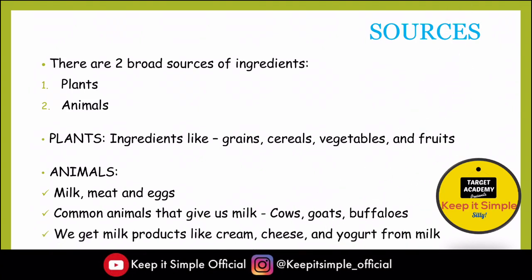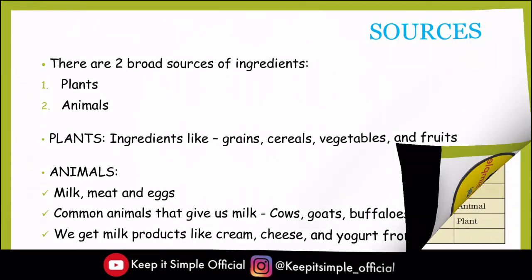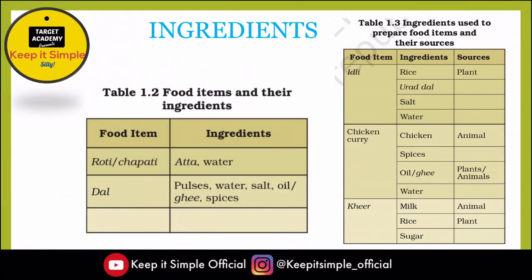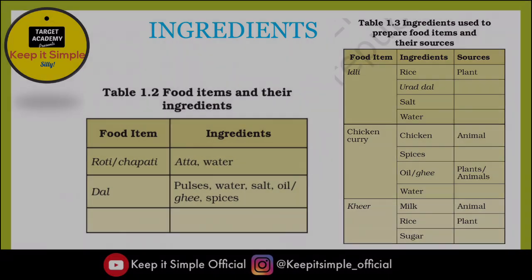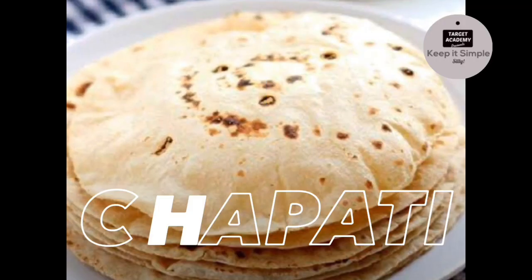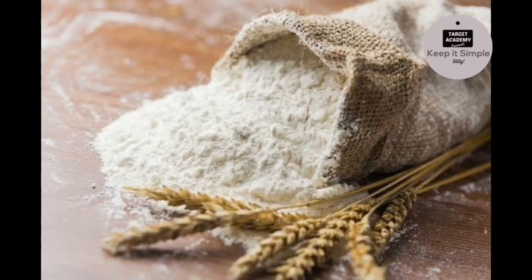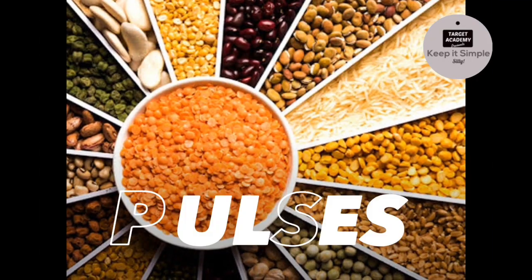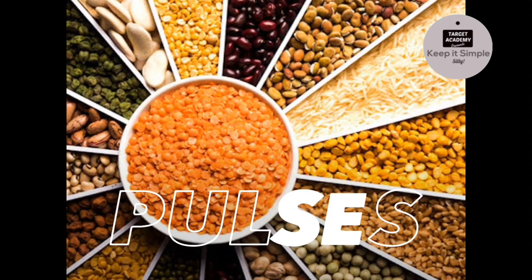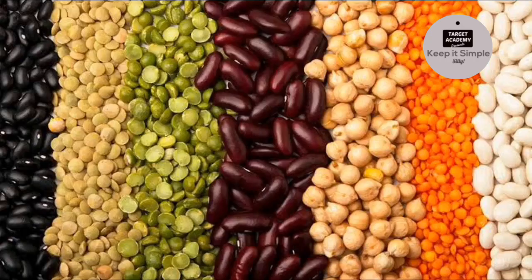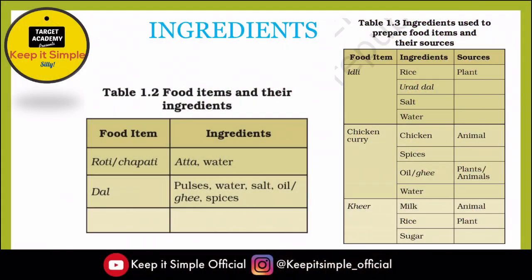These are called milk products. In this chapter there are two charts. The first chart discusses food items and their ingredients. For roti or chapati, you need two ingredients: aata and water. For dals, you need pulses, water, salt, oil or ghee, and spices — so you need more ingredients.